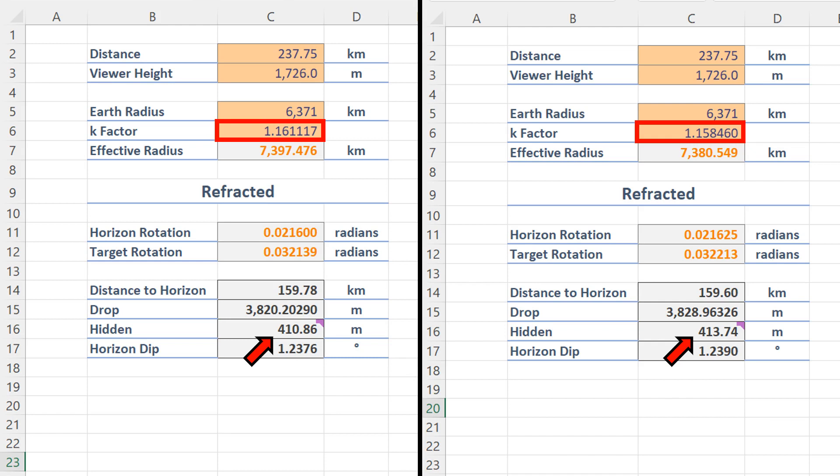If you compare the green light, which is on the left, to the infrared light on the right, you get a difference of three whole meters in hidden height. Now I probably don't have to tell you that over a distance of 238 kilometers, three meters means absolutely fuck all. Alright, so that's claim number two dispensed with. We don't see further with infrared because it refracts less. We actually see further with infrared because the shorter wavelengths are much more likely to be scattered away by the atmosphere.